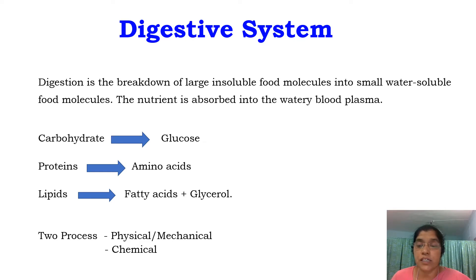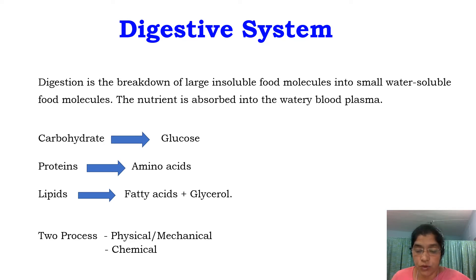Digestion takes place mainly through two processes. The first process is the physical and mechanical process. The food materials are converted into small particles by chewing, swallowing, mixing, and propulsion.